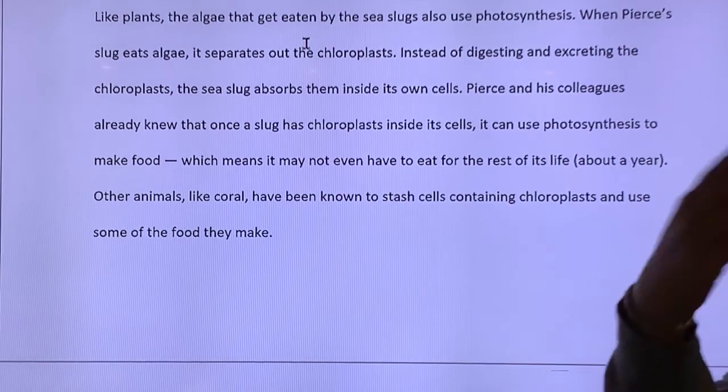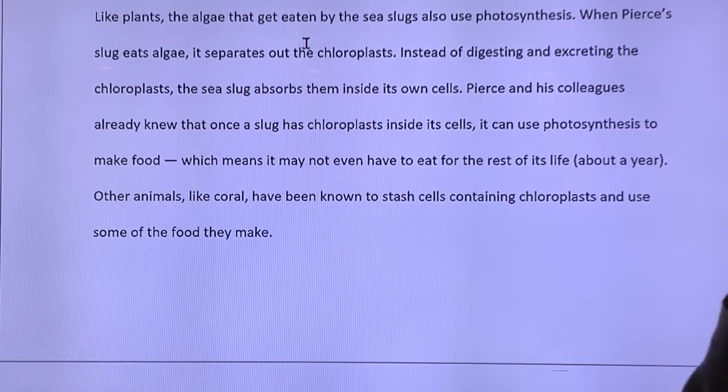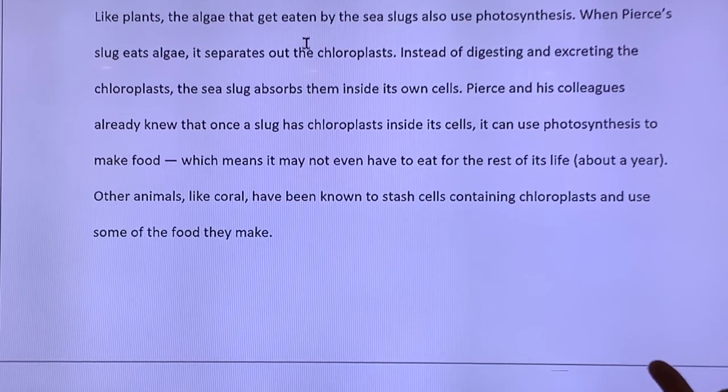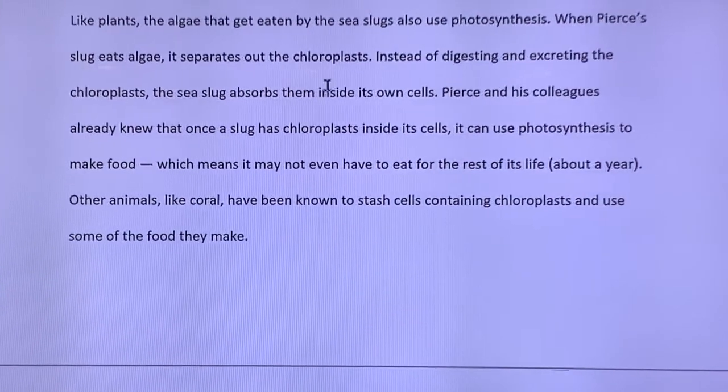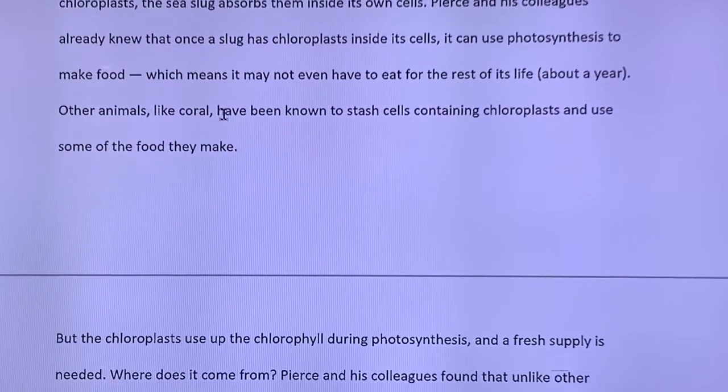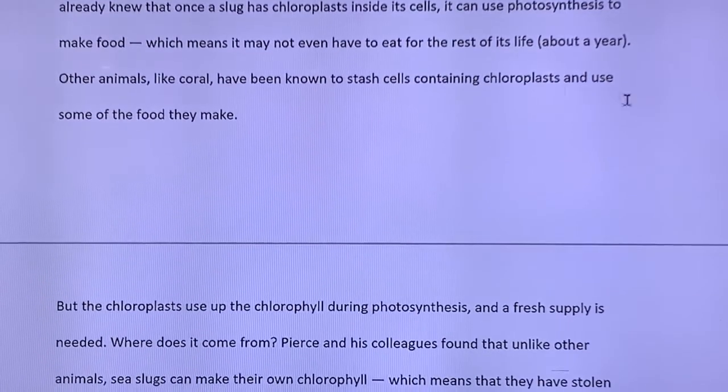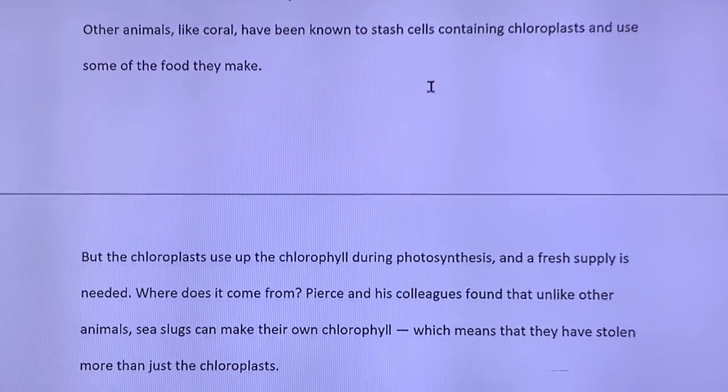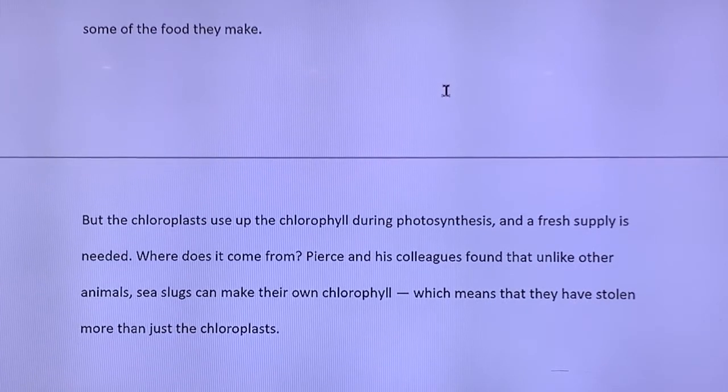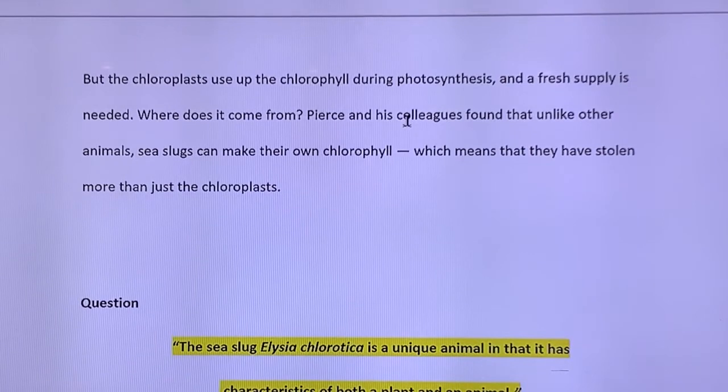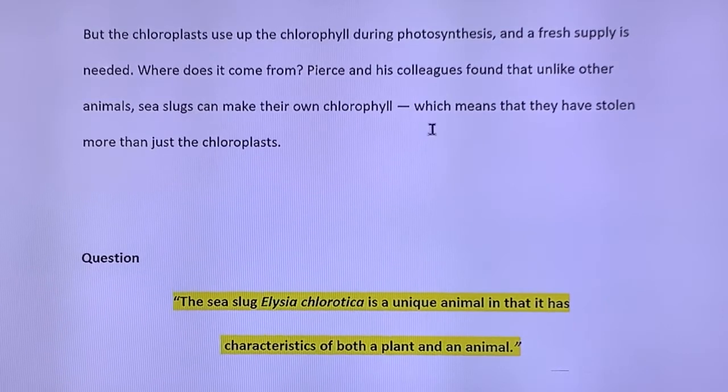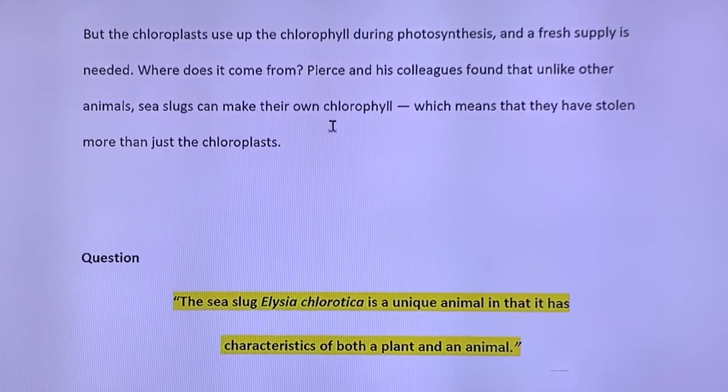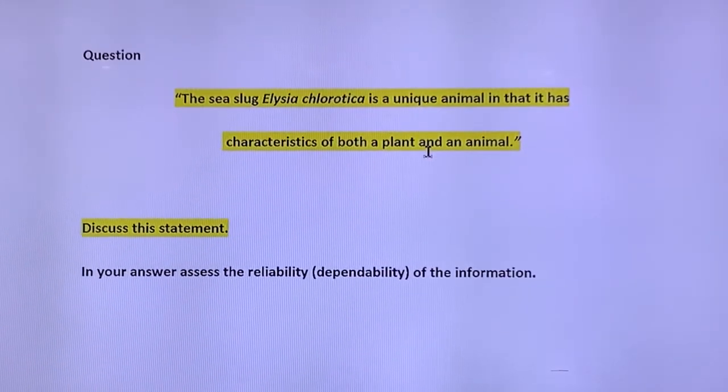Can you see by how you answer this, am I starting to get an idea that you understand chlorophyll is for photosynthesis. Photosynthesis happens in your chloroplasts. Chloroplasts are usually only found in plants. That's the key here. It can use photosynthesis to make food, which means it may not even have to eat for the rest of its life, which is only about a year. Other animals like coral have been known to stash cells containing chloroplasts and use some of the food they make. But the chloroplasts used up the chlorophyll during photosynthesis and a fresh supply is needed. Where does it come from? So they've found that unlike other animals, sea slugs can make their own chlorophyll, which means that they have stolen more than just the chloroplasts, so they chemically can make the chlorophyll themselves.